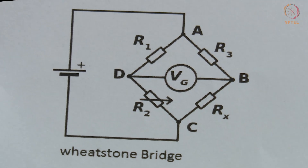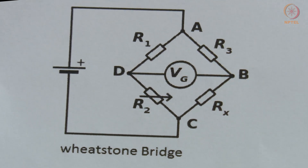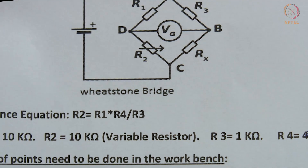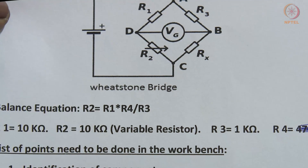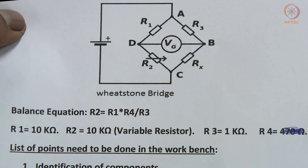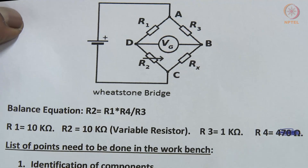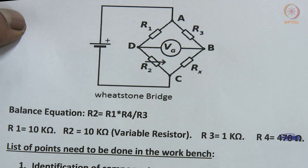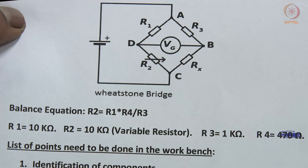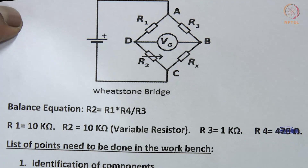There is an equation to find the unknown resistance value: R2 equals R1 into R4 divided by R3. Here, R1 and R3 are fixed resistors, R2 is a variable resistor, and Rx is the unknown resistance. We are connecting a multimeter between points B and D to measure voltage. Whenever the bridge is balanced, the voltage between B and D will be 0 volts.